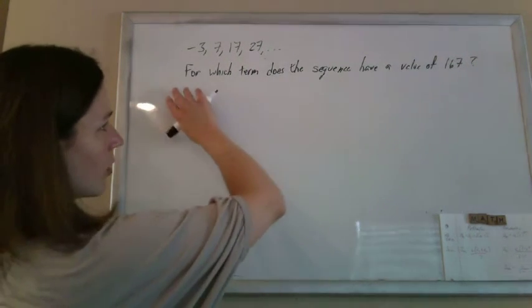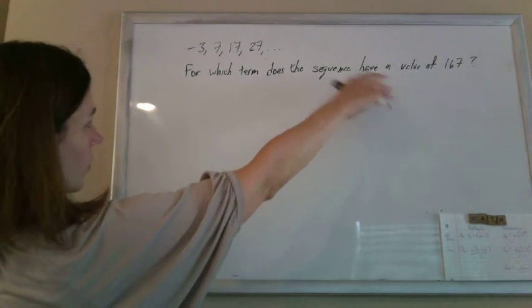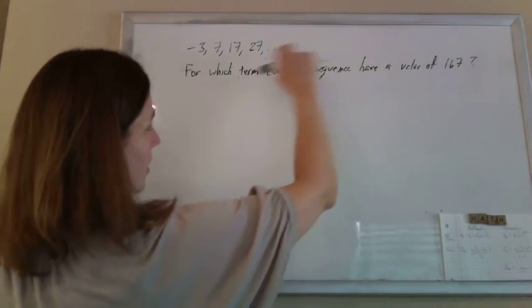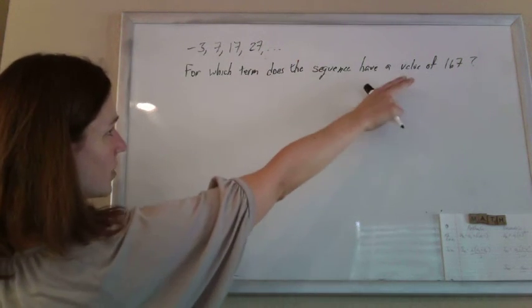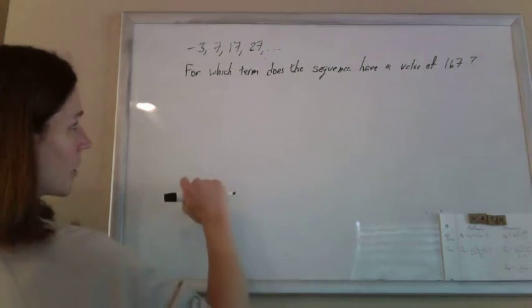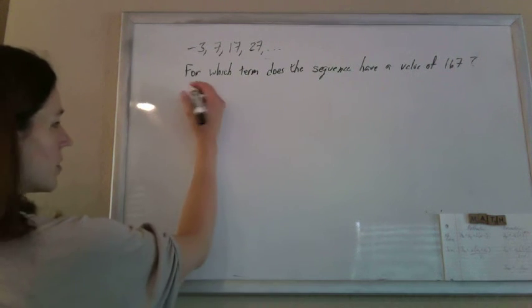Okay, so they want to know for which term it has a value of 167. You could keep adding 10 until you got to that one and figured out which term that was, but they want you to use a formula.